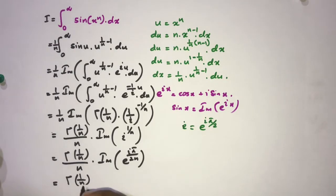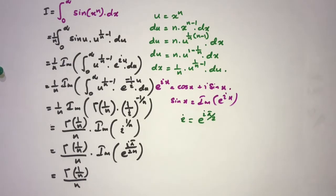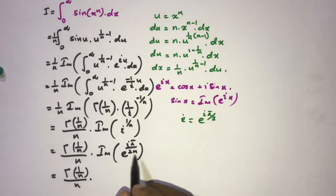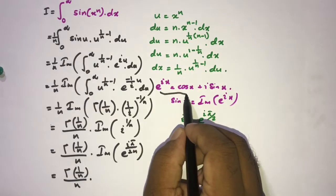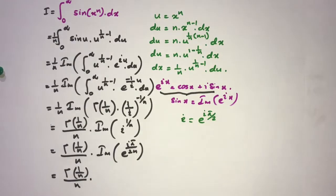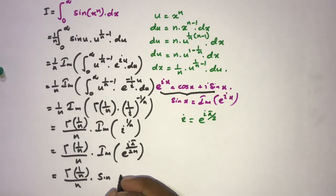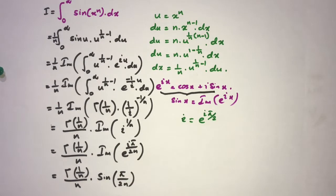Using Euler's formula again, the imaginary part of e to the i pi over 2n is equal to sine of pi over 2n. So the general result is Gamma(1 over n) over n times sine of pi over 2n. This is the generalization of the Fresnel integral.